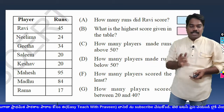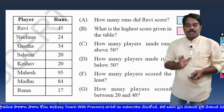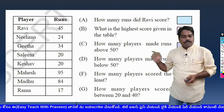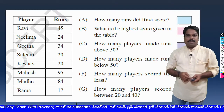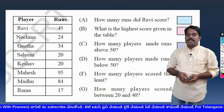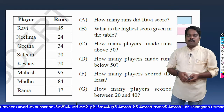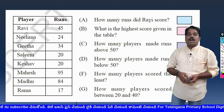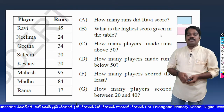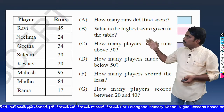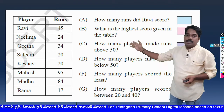There is no question E, so there is a mistake. Let us look at the first question now: How many runs did Ravi score? Let us observe this chart carefully.